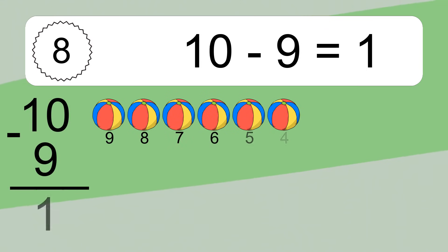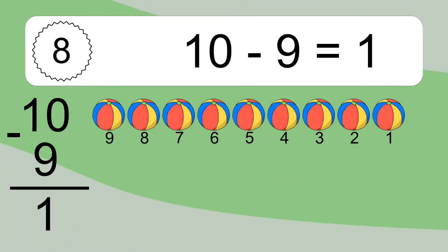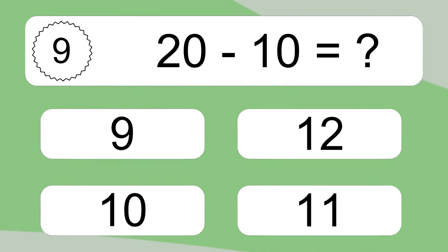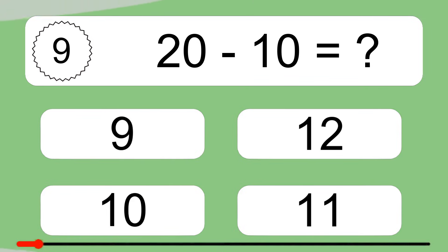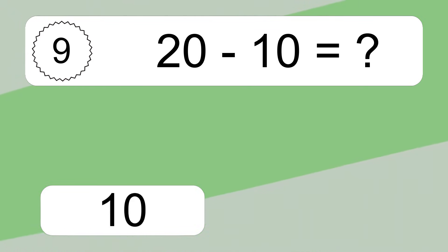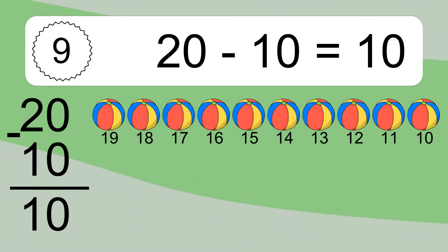10 minus 9 equals 1. Let's count it: 9, 8, 7, 6, 5, 4, 3, 2, 1. 20 minus 10 equals what? 20 minus 10 equals 10. Let's count it: 19, 18, 17, 16, 15, 14, 13, 12, 11, 10.